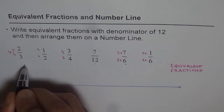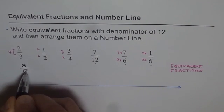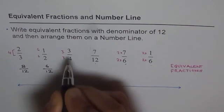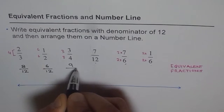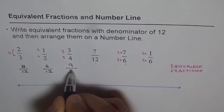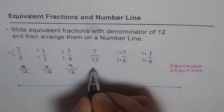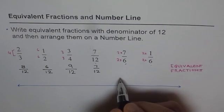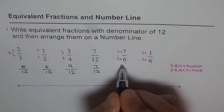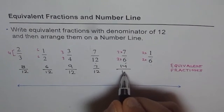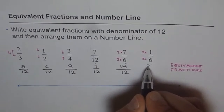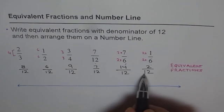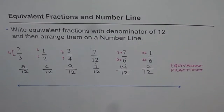So carrying out the conversions: 4 times 2 is 8, giving us 8/12. 6 times 1 is 6, giving 6/12. 3 times 3 is 9 and 3 times 4 is 12, giving 9/12. 7/12 is already with denominator 12. Then 2 times 7 is 14 and 2 times 6 is 12, giving 14/12. And 2 times 1 is 2, 2 times 6 is 12, giving 2/12. So we got all these equivalent fractions.